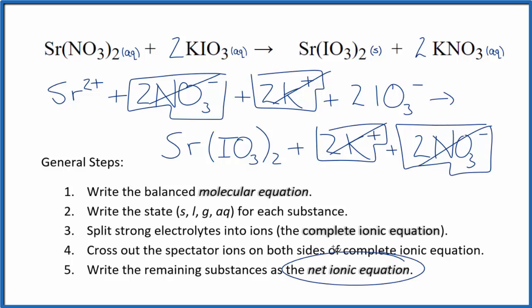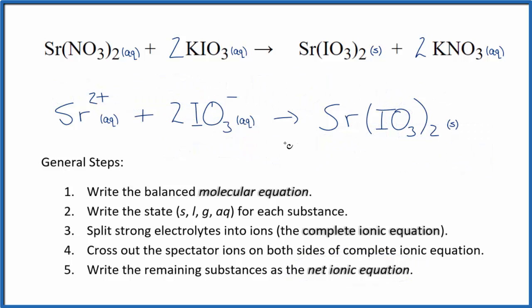And what's left, that's the net ionic equation for strontium nitrate plus potassium iodate. I'll clean this up, write the states, we'll have our net ionic equation. So this is the balanced net ionic equation for Sr(NO₃)₂ plus KIO₃.